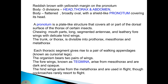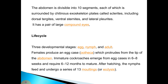The trunk or thorax is divisible into three parts: prothorax, mesothorax, and metathorax. Each thoracic segment gives rise to a pair of walking legs known as cursorial legs, and the organism bears two pairs of wings. The forewings, known as tegmina, arise from the mesothorax and are dark and opaque. The hindwings arise from the metathorax and are used in flight, though cockroaches rarely resort to flight. The abdomen is divisible into ten segments, each surrounded by chitinous exoskeleton plates called sclerites, including dorsal tergites, ventral sternites, and lateral pleurites.